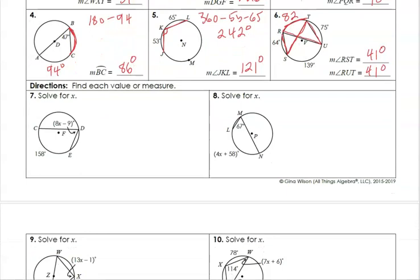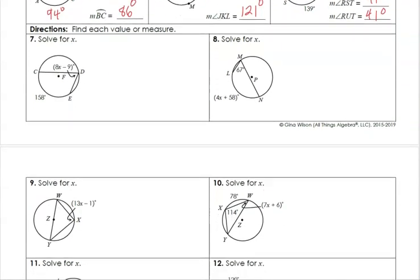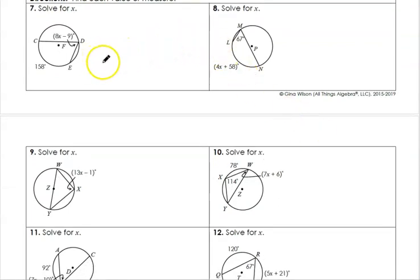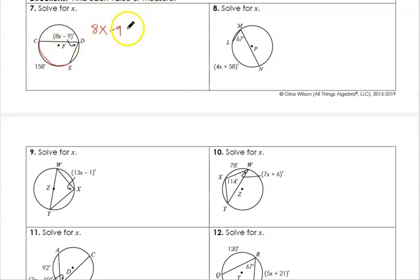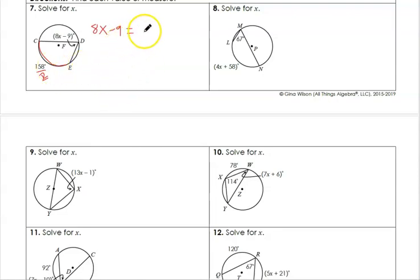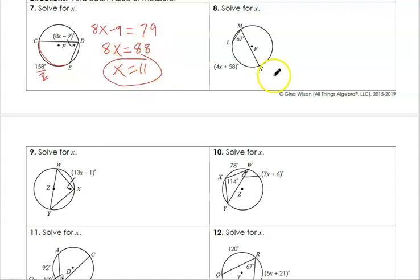Now let's solve for X. In number 7, we're given the angle 8X minus 9 and the intercepted arc of 158. The angle is half of the arc, so we write: 8X minus 9 equals one half of 158, which is 79. Solving: 79 plus 9 equals 88, divide by 8, and our value for X is 11.